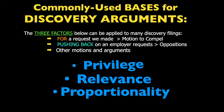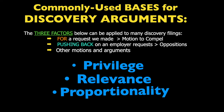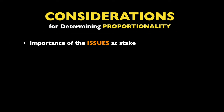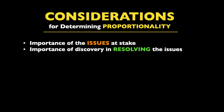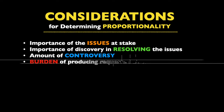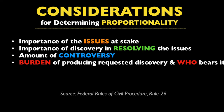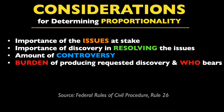A request for information that's non-privileged, relevant, and proportional to the needs of the case is going to be granted. Proportionality is a rule that says the burden of producing the discovery has to be proportional to what's at stake in the case. To determine what's proportional, there are four considerations the court takes into account: importance of the issues at stake, importance of the requested discovery in resolving those issues, amount of controversy, and burden of producing the requested discovery and who bears it. Based on these considerations, the court will decide on proportionality when considering motions to compel, objections to discovery, and other disputes.